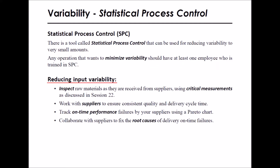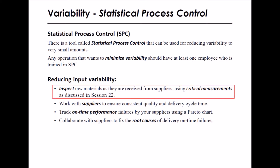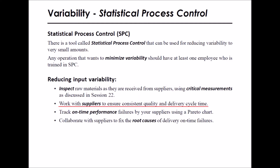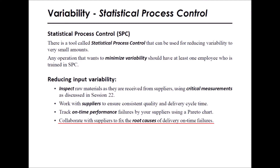Let's talk briefly about reducing input variability. To reduce input variability, inspect raw materials as they are received from suppliers using critical measurements as discussed in Session 22. Work with your suppliers to ensure consistent quality and delivery cycle time. Track on-time performance failures using a Pareto chart, and share it with your suppliers to collaborate on fixing the root causes of delivery on-time failures. You can also share the Cheetah program with them to help them rapidly improve their on-time performance.